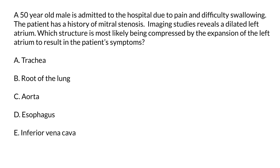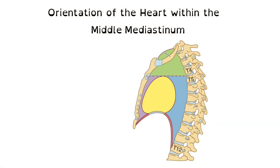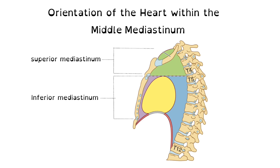To answer this question, we need to understand the orientation of the heart within the mediastinum. The thoracic cavity can be broken down into two main areas: the superior mediastinum, which runs from the thoracic inlet to the sternal angle, and the inferior mediastinum. The inferior mediastinum can be further subdivided into three aspects: the anterior mediastinum, the middle mediastinum — where the heart is located — and the posterior mediastinum.